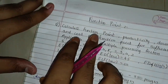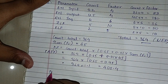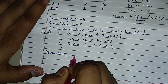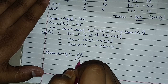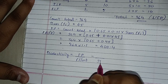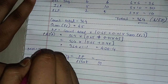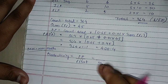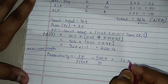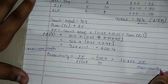Next, we find productivity. The formula is: productivity = function point / effort. The effort given in the question is 37 MM (man months). Our FP came as 400.4, so productivity = 400.4 / 37 = approximately 10.822 FP per man month.